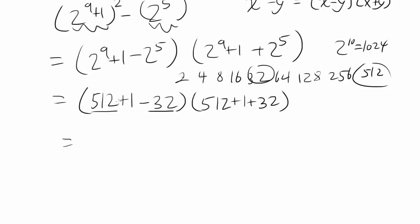512 minus 32 is 480. Adding 1 to it gets us 481. And this expression, 512 plus 33 is 545.